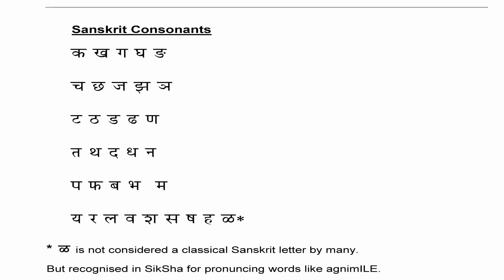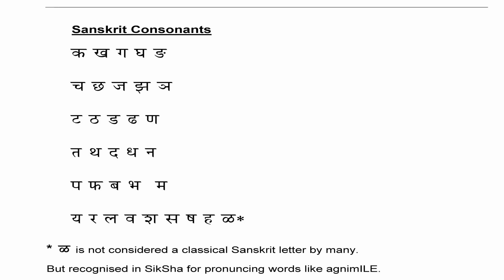Remember the rule for the 25 key consonants: Ka, Kha, Ga, Gha — nasal Nga. Cha, Chha, Ja, Jha — nasal Nga. Ta, Tha, Da, Dha — nasal Na. Ta, Tha, Da, Dha — nasal Na. Pa, Pha, Ba, Bha — nasal Ma. These are the 25 key letters of the Sanskrit consonants.